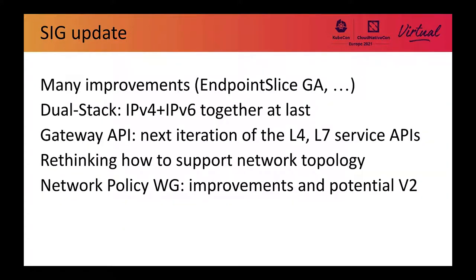So what has been happening in the SIG? There are many smaller improvements and features that people have requested. APIs have gone GA that have been covered in detail before, such as endpoint slice. And also there are a couple of big items: dual stack, which is support for IPv4 and IPv6; Gateway API, which is the next iteration of L4/L7 service APIs; rethinking how to support network topology and network routing; and finally, the network policy working group, which has already landed some features and is looking at a potential version 2 of the API.